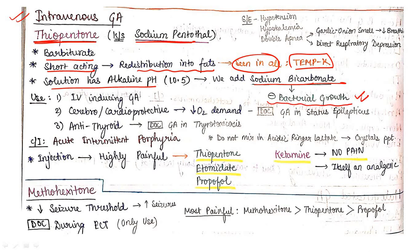Uses of thiopentone: used as IV inducing general anesthetic. It is cerebral and cardioprotective by decreasing oxygen demand. It is also antithyroid in nature, so drug of choice for anesthesia in thyrotoxicosis. This is very important - antithyroid in nature so can be used for that.